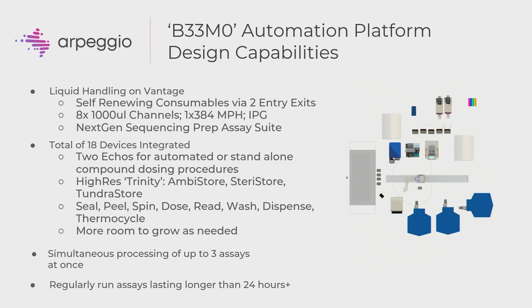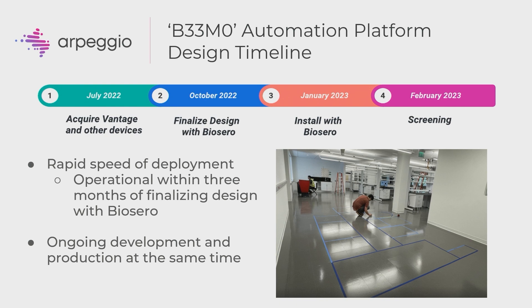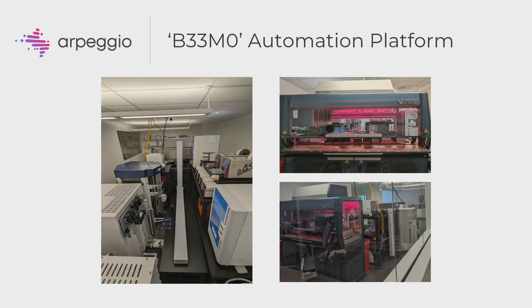In terms of putting the pieces together — since we already knew what we wanted to integrate, we used Biosero to rapidly assemble everything. After finishing our design with Biosero and deciding what to include, we were able to get the arm, table, and software all installed within three months. From contacting them in October, we were actually screening by February.